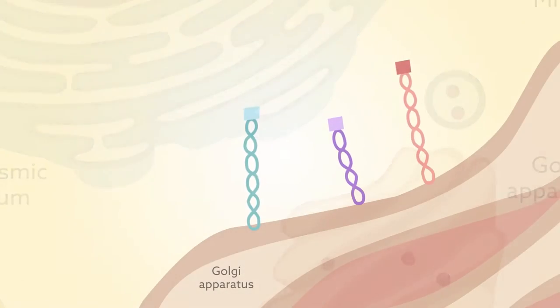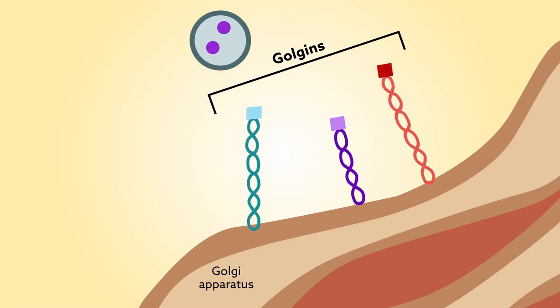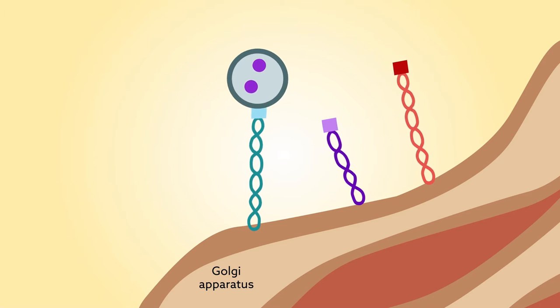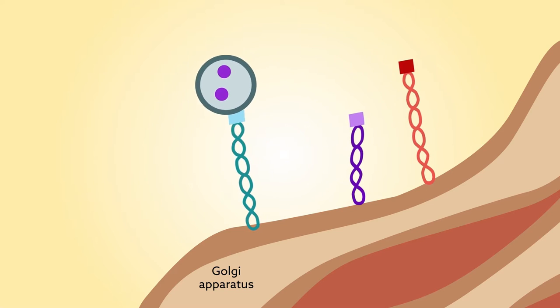It's already known that long proteins called Golgins serve as addresses for and help capture vesicles heading to the Golgi apparatus, the cell's central sorting station. But little is known about how they do it.